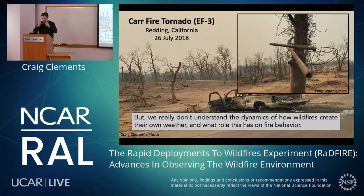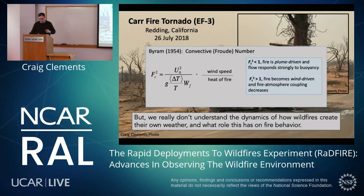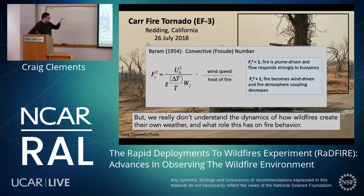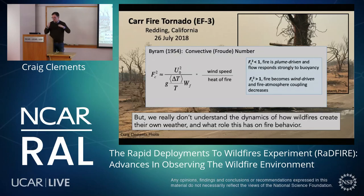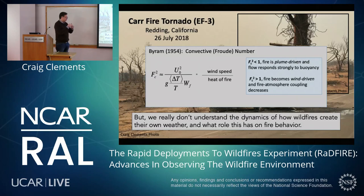Going back to 1954 with George Byram's convective Froude number, he basically looked at the power of the wind versus the power of the fire. This framework lets us determine whether the fire is plume-driven. If it's heat-driven with weak winds, the column stands straight up. If it's a highly wind-driven fire where wind exceeds the heat, the plume tilts over. We describe these in the literature as plume-dominated versus wind-driven fire environments.